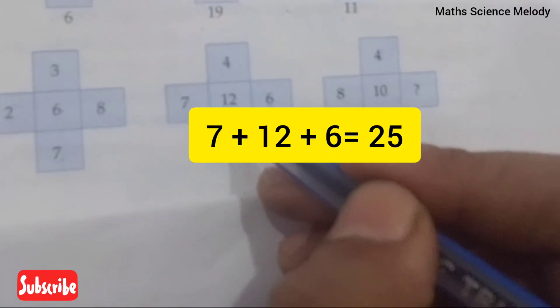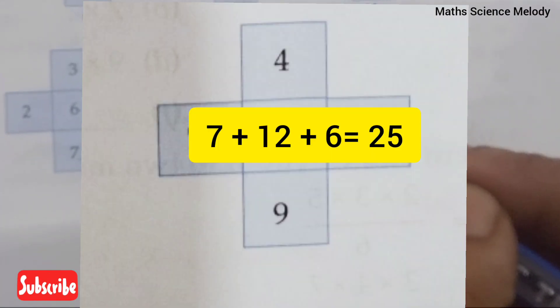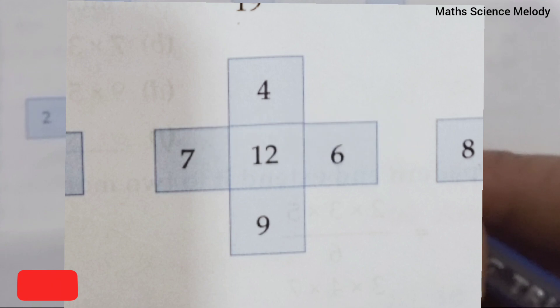Seven plus twelve equals nineteen, nineteen plus six equals twenty-five. Four plus twelve equals sixteen, sixteen plus nine equals twenty-five. So this is the pattern which is given here.